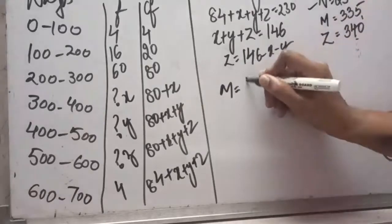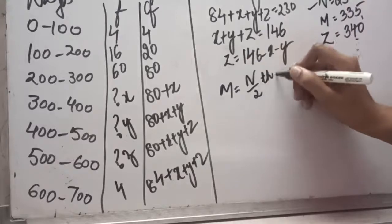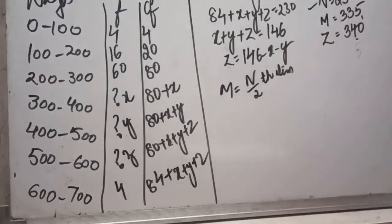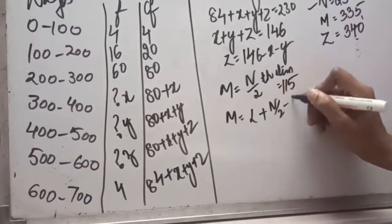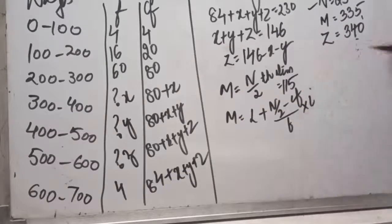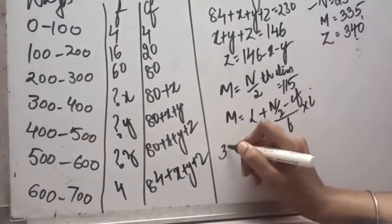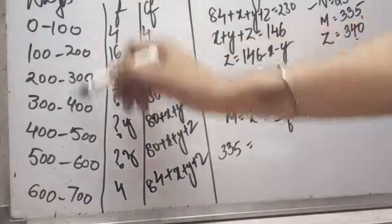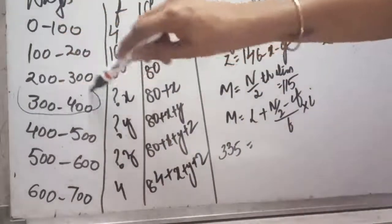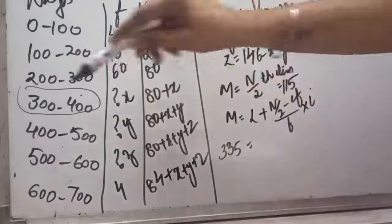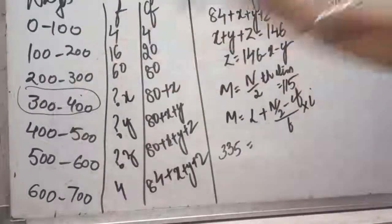Coming to our second information — median is given as 335. The size of the n/2-th item: N is 230, so 230 divided by 2 gives 115. Applying the median formula: lower limit plus (n/2 minus CF) divided by f, multiplied by i. Since median is 335, we can observe that 335 lies in the class interval 300 to 400.